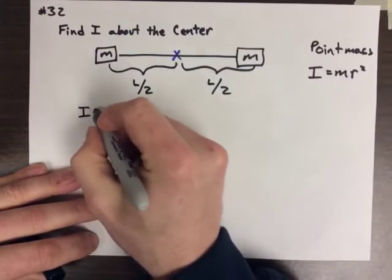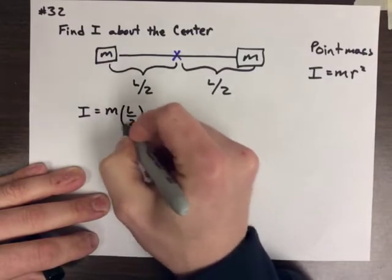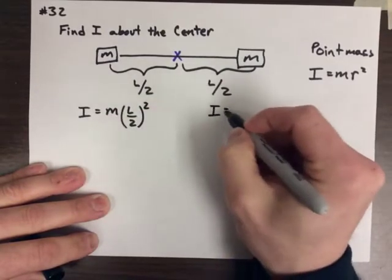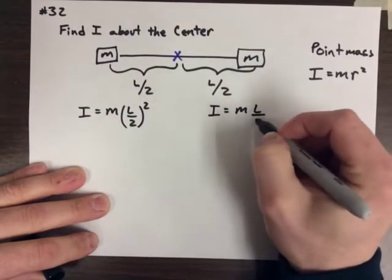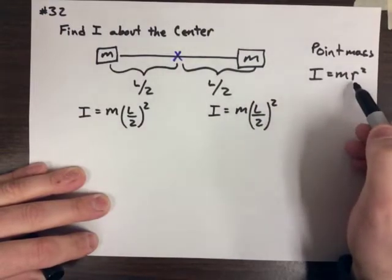So, for the one on the left here, I is going to equal m times L over 2 squared. For the one on the right, I is going to equal m times L over 2 squared. It doesn't matter the direction on the r, just the distance.